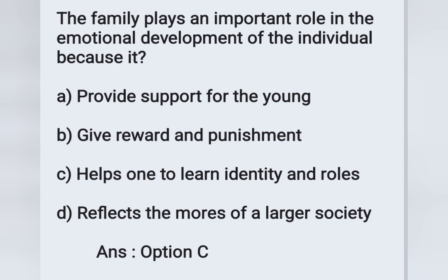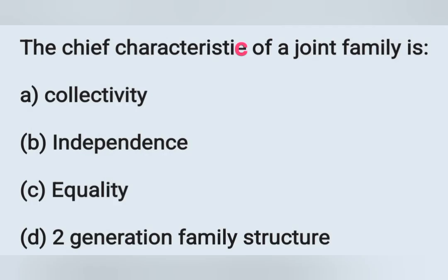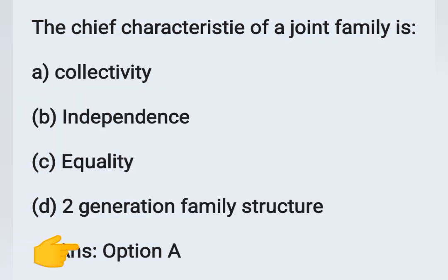The next question: the chief characteristic of a joint family is — Options: A) Collectivity, B) Independence, C) Equality, D) Two-generation family structure. The main characteristic feature of a joint family is collectivity. Option A is the correct answer.